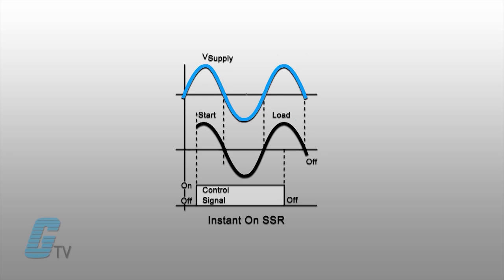Instant on relays turn on the load immediately when the control voltage is present. This allows the load to be turned on at any point of the sine wave and is intended for precise control applications.